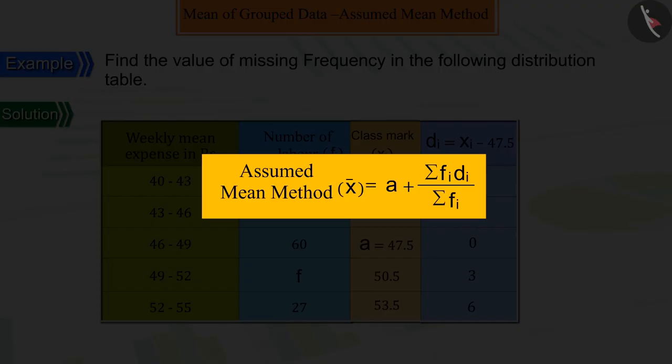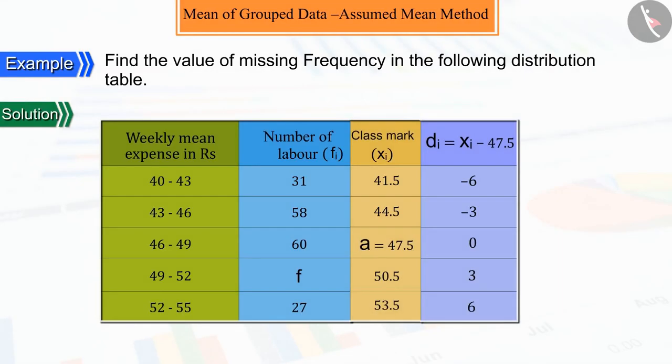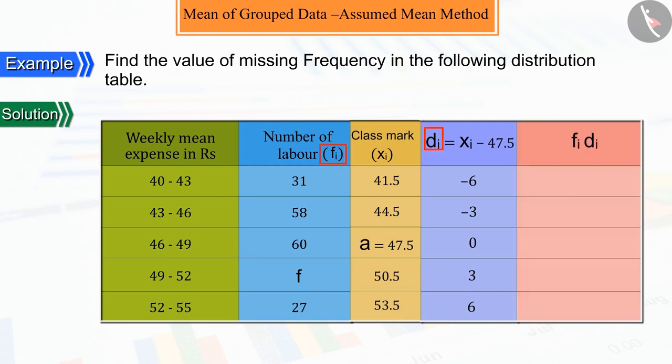From the assumed mean method, we can see that we need the sum of the products of FIDI and the sum of frequencies FI. So we multiply each DI by its corresponding frequency FI.